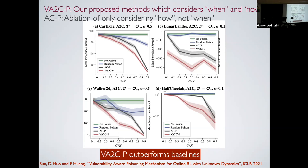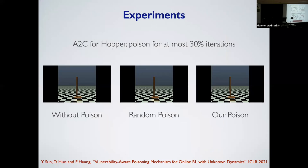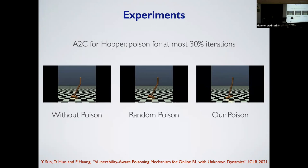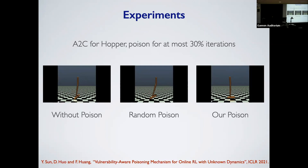An interesting observation is that random poisoning sometimes actually facilitates the learner, as shown in figures B and C — mainly due to the uncertainty of the environment. In animation experiments using A2C for the Hopper, our poison design — the first poisoning method for online reinforcement learning — achieves very good performance, basically stopping the hopper from hopping, whereas random noise actually sometimes helps with the hopping.